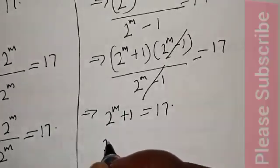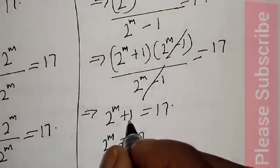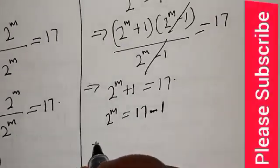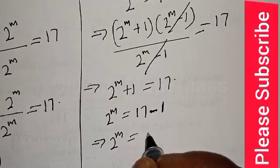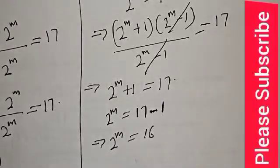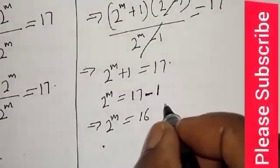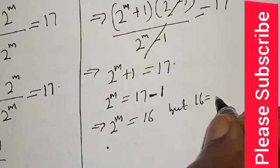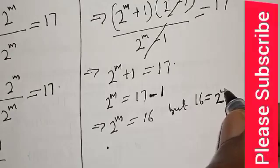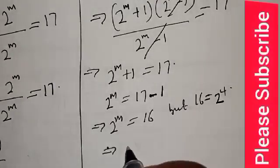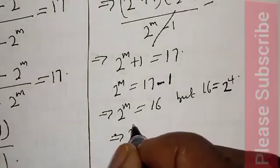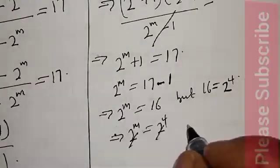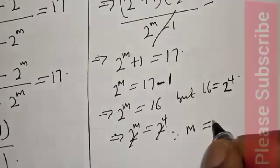So 2 raised to the power m equal to 17, and if 1 crosses to the other side it will be minus 1. This implies that 2 raised to the power m is equal to 16. 17 minus 1 is equal to 16, and 16 is the same thing as 2 raised to the power 4. This implies that 2 raised to the power m equals 2 raised to the power 4. They have the same base, so we cancel. Therefore m is equal to 4.